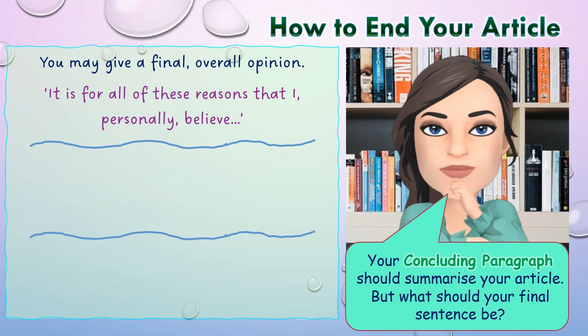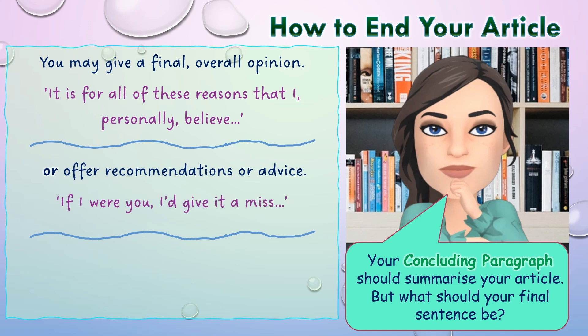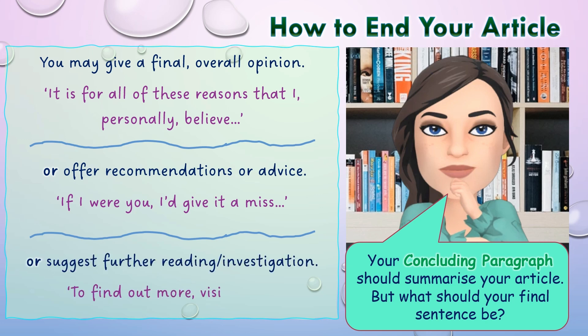You could offer recommendations or advice — for example, 'if I were you, I'd give it a miss.' This is useful if you're writing an article about an event, a place to travel, or reviews. Or you could suggest further reading or investigation — this is really good if you can't think of a way to end the article, as it's quite easy to do. Just think of a website or a meeting date: 'To find out more, visit www.suchandsuch.com.'